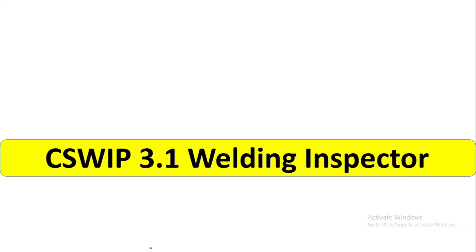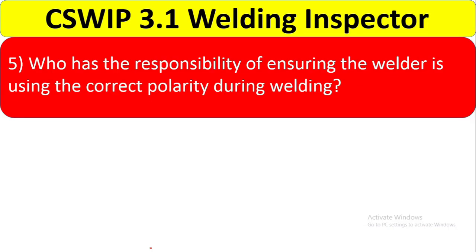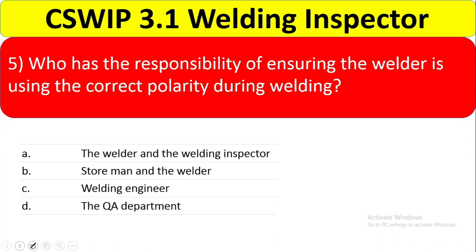Question 5: Who has the responsibility of ensuring the welder is using the correct polarity during welding? The answer is the same — the welder and the welding inspector. The storeman and welder, welding engineer, and QA department are incorrect because polarity must be checked on site daily. The correct answer is option A, welder and welding inspector.